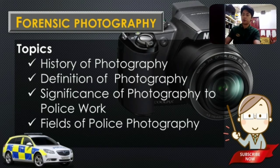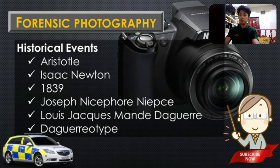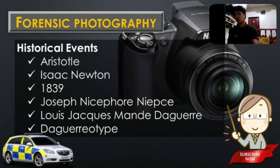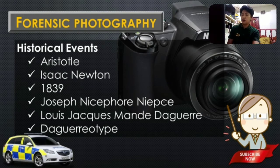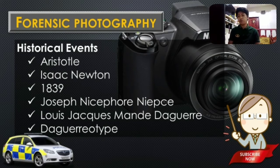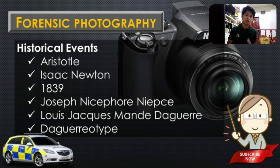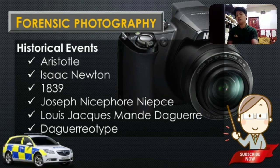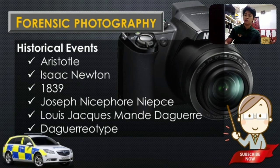Let's jump into our first topic: the historical development of photography. We have some personalities involved with their contributions to the field. Going first with Aristotle — a famous Greek philosopher — his contribution was his invention of the pinhole camera, or what we call the camera obscura. This gave birth to the first concept of using light in order to record a photo.